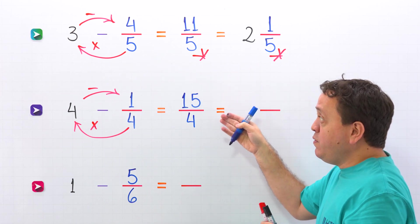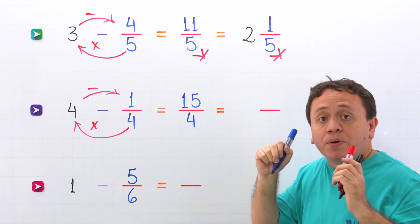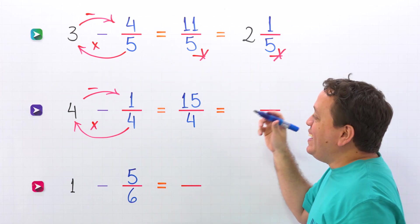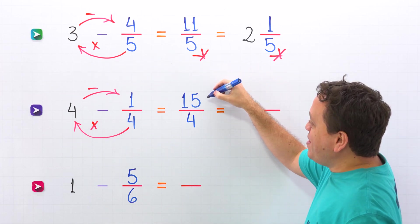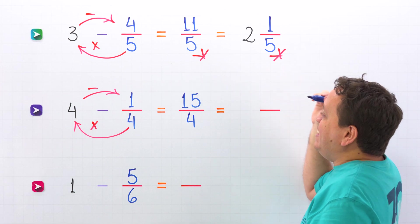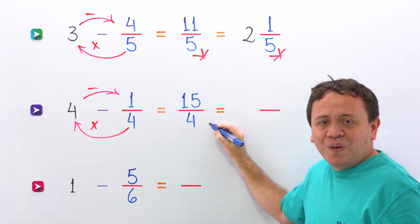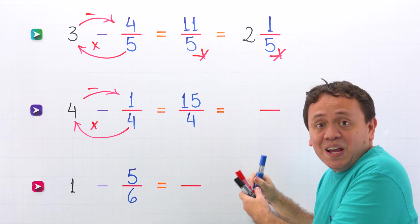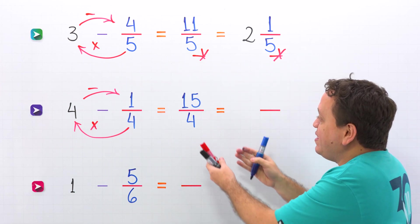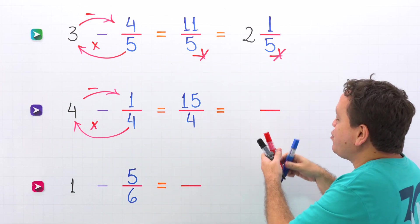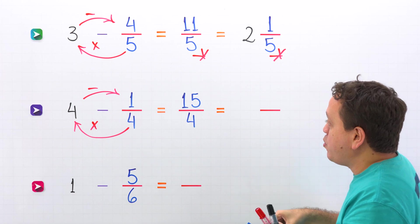However, 15 fourths is an improper fraction, given that the numerator 15 is greater than the denominator 4. So finally, we are going to convert this improper fraction to a mixed number.